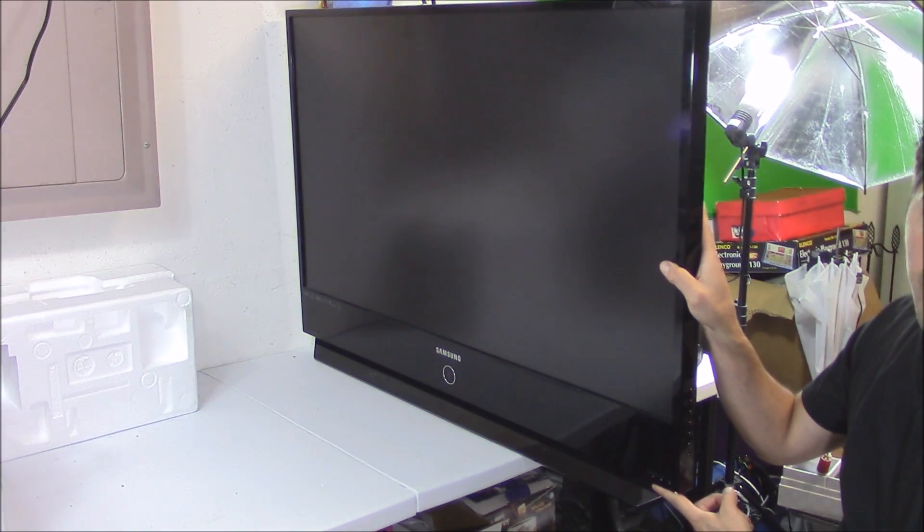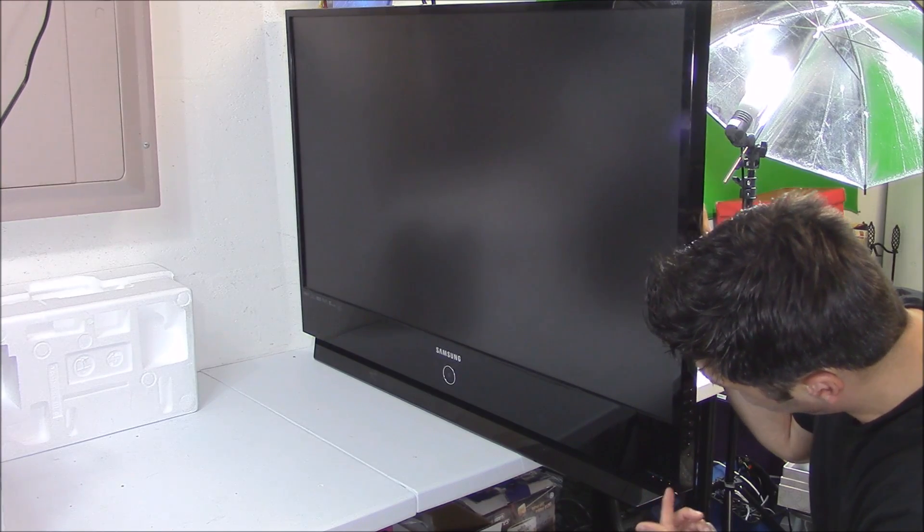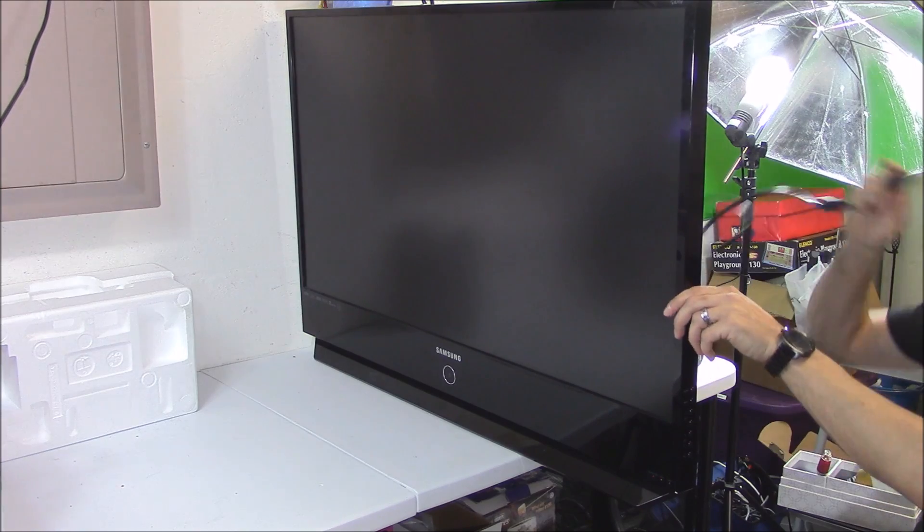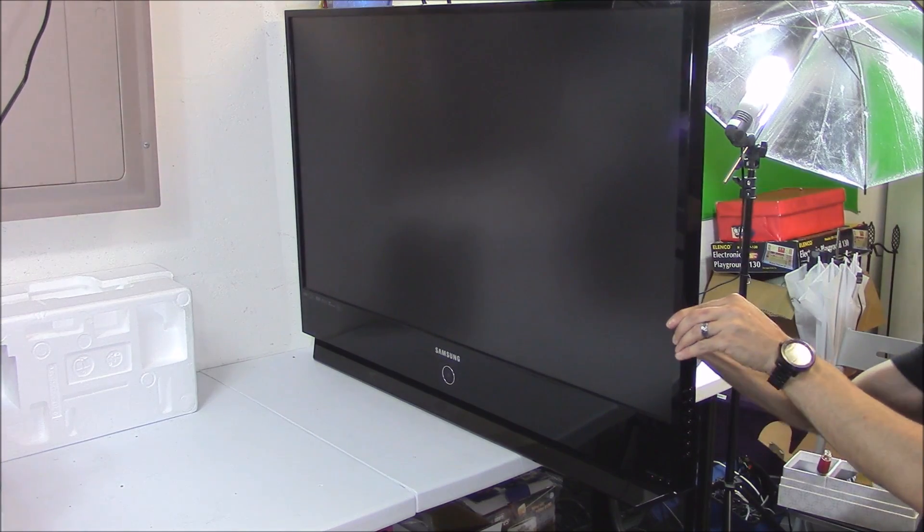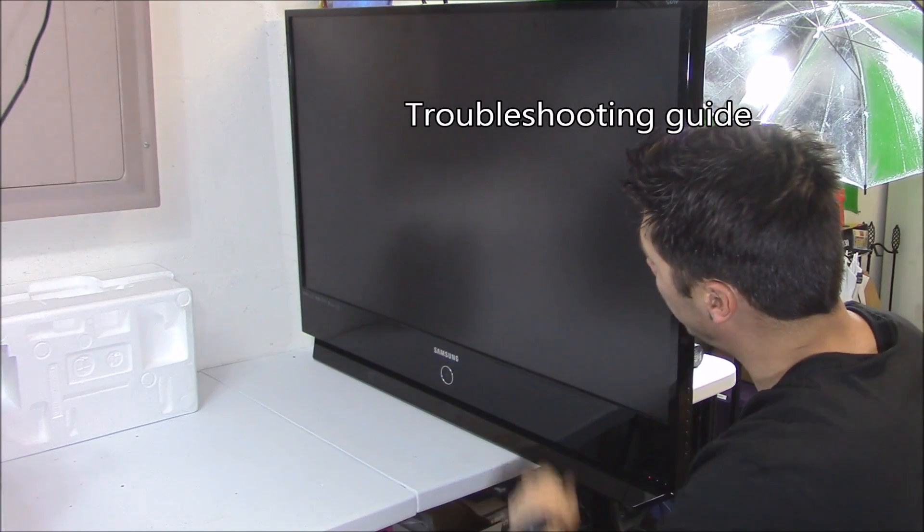I got all three LEDs blinking right here. This is standby, timer, lamp. They're all shining. And every time I plug in the power cord, it clicks on and then it chimes off. So, I have no screen, nothing going on.